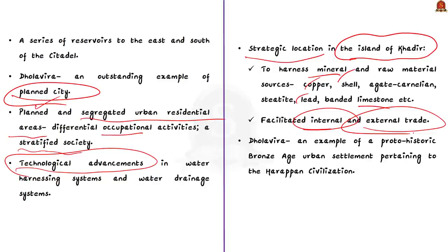Dholavira is an exceptional example of a proto-historic Bronze Age urban settlement. Proto-history is the transitional period between prehistory — where no recorded history exists — and recorded history. The city flourished for nearly 1500 years, representing long continuous habitation. From a prelims perspective, the UNESCO World Heritage List is very important, and viewers are requested to go through all 40 UNESCO World Heritage Sites in India.